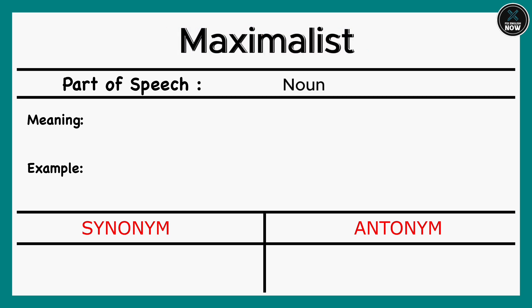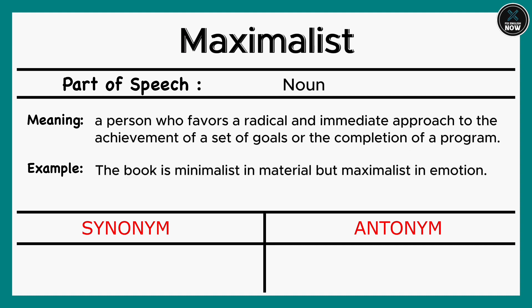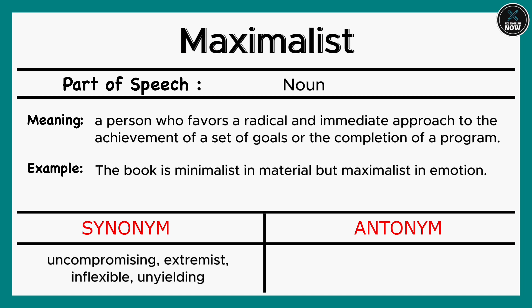Maximalist: A person who favors a radical and immediate approach to the achievement of a set of goals or the completion of a program. Example: The book is minimalist in material but maximalist in emotion. Synonyms: Uncompromising, Extremist, Inflexible, Unyielding. Antonyms: Conciliatory, Flexible, Moderate.